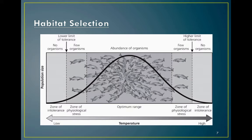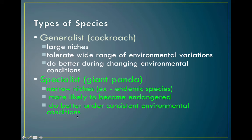Contrast a specialist species against a generalist species. General species like a cockroach have a large niche — they can eat and interact with lots of different things and tolerate a wide range of environmental variations. They do better during changing environmental conditions. Specialists have narrow niches, like endemic species found only in one very specific set of conditions. They are more likely to become endangered because if their special area disappears, they disappear too. Specialists thrive in stable conditions and can out-compete anything in their consistent environment. Generalists thrive in changing conditions.